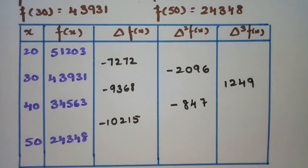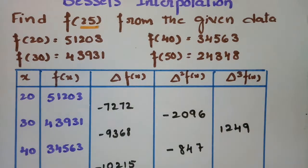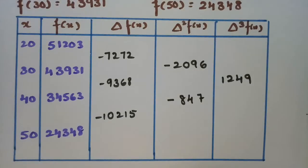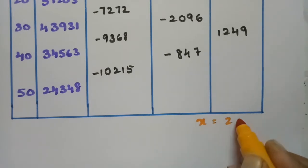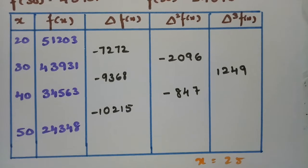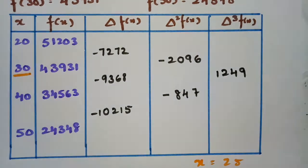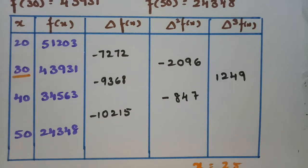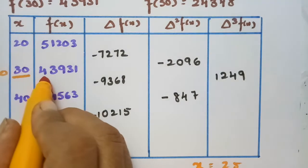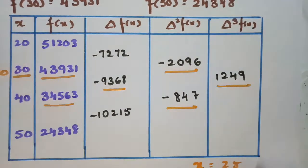After finishing the difference table, we have to find f(25). The x value is 25, and the nearest value to 25 — which should be less than or equal — is 30. So I am considering 30 as x₀. In Bessel's formula, we take 2 values at a time, then a single value, then 2 values, then single — double, single, double, single.